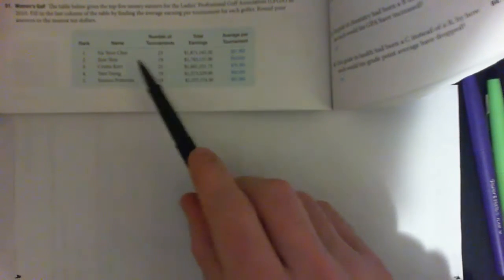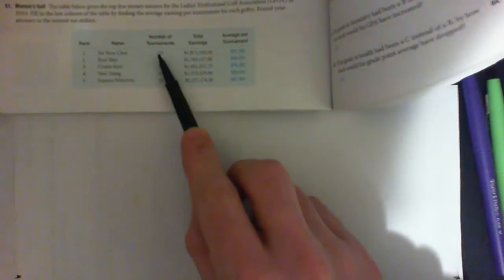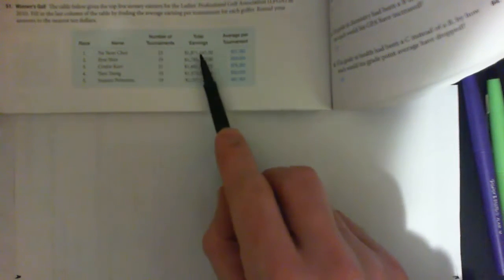In this video we're going to answer this question here. So we start with the first player, we take their number of tournaments and their total earnings and we have to calculate the average per tournament. So the first player played 23 tournaments and this is the total earnings. So to get the average we've got to go the amount over the number of tournaments. So we go the total earnings over number of tournaments.